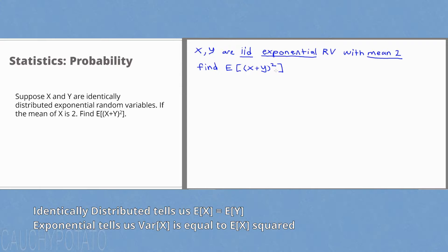Because we are going to have the FOIL inside, we are going to need the expected value of x and y inside squared. x and y are identically distributed, which means the probabilities of x and y are the same and mutually independent. The expected value of x and y are equal, and the variance of x and y are equal as well.